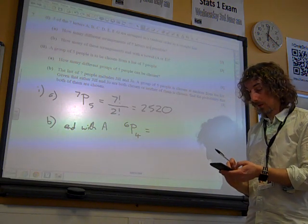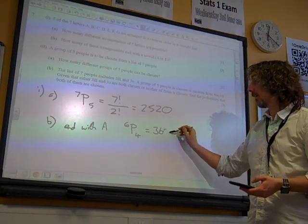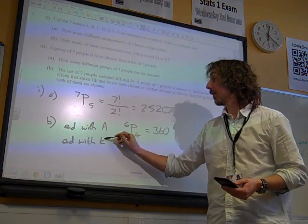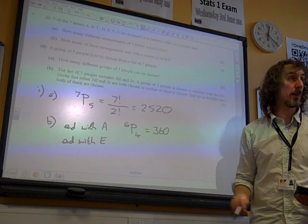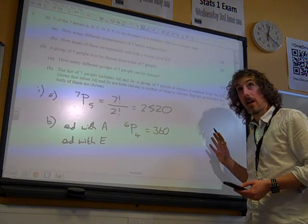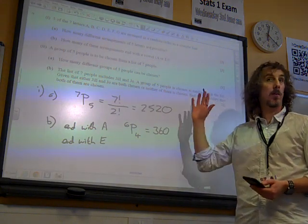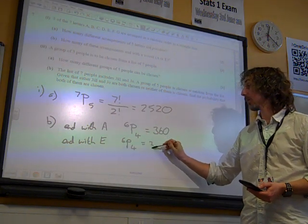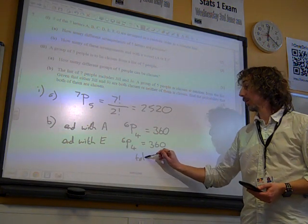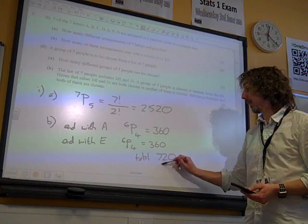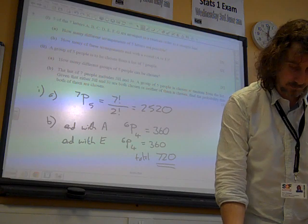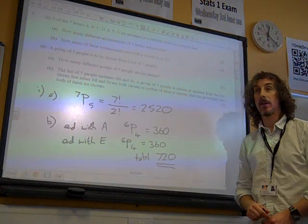6P4 gives us 360. And if it ends with E, it's the same scenario, isn't it? That means E is at the end, and of the remaining six, we need to arrange four of them before the E.